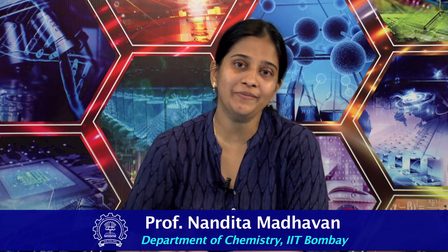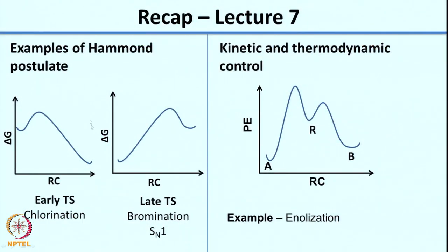Welcome to lecture 8 of reaction mechanisms. As usual, we will first do a recap of the previous lecture. In the last lecture we looked at examples of Hammond's postulate, and we looked at how when you do free radical chlorination you have an early transition state, whereas with the bromination reaction you have a late transition state because in one case the process is exothermic and in another case it is endothermic.